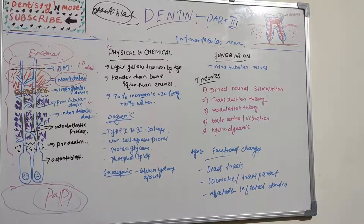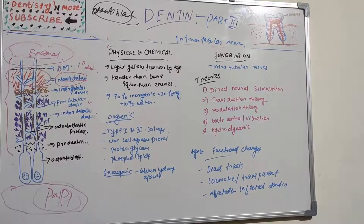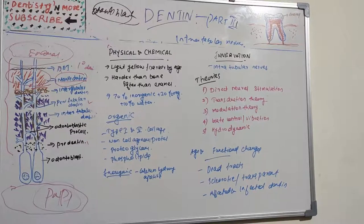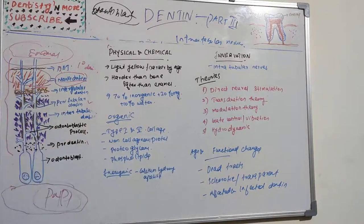The transduction theory states that the odontoblastic process is the primary structure excited by the stimulus, and that the impulse is transmitted to the nerve endings in inner dentine. The drawback is that there are no neurotransmitter vesicles in the odontoblast process to facilitate a synapse or synaptic specialization. So this theory is also not well accepted.